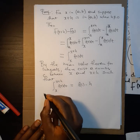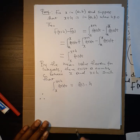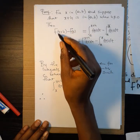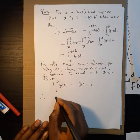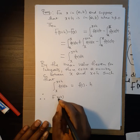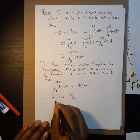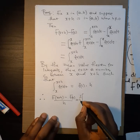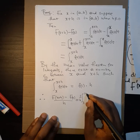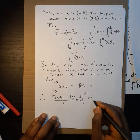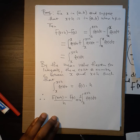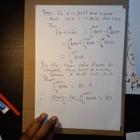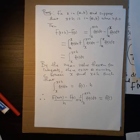Therefore, since H is not equal to 0, we have [F(x+h) − F(x)] / H = (1/H) times the integral from x to x+h of f(t) dt, which equals f(C).